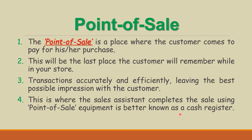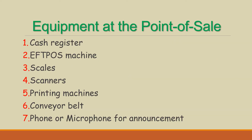Point of sale equipment is better known as a cash register. The cash register includes a computer, printer, and swipe card reader. Number two is the EFTPOS machine. EFTPOS machine means Electronic Fund Transfer Point of Sale machine, which is essentially a swipe card reader for debit or credit card payments.